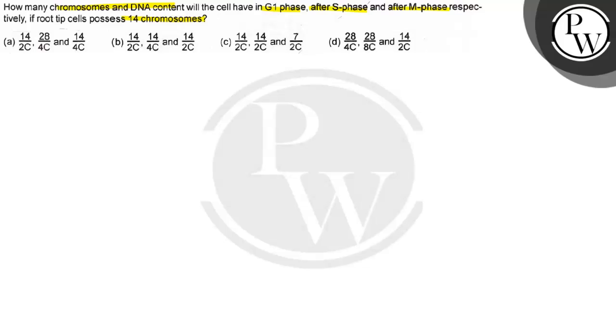C stands for number of chromatids. Option B says 14 chromosomes 2 chromatids, 14 chromosomes 4 chromatids, and 14 chromosomes 2 chromatids.